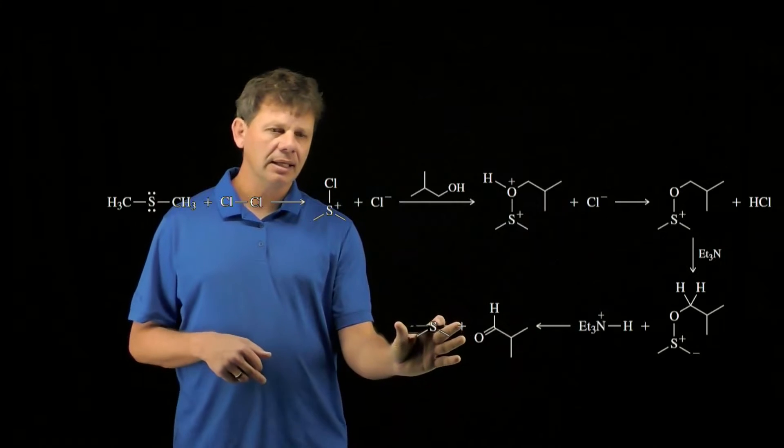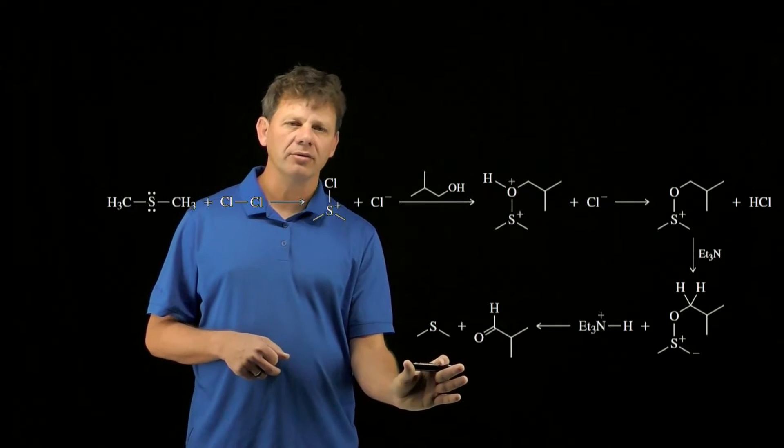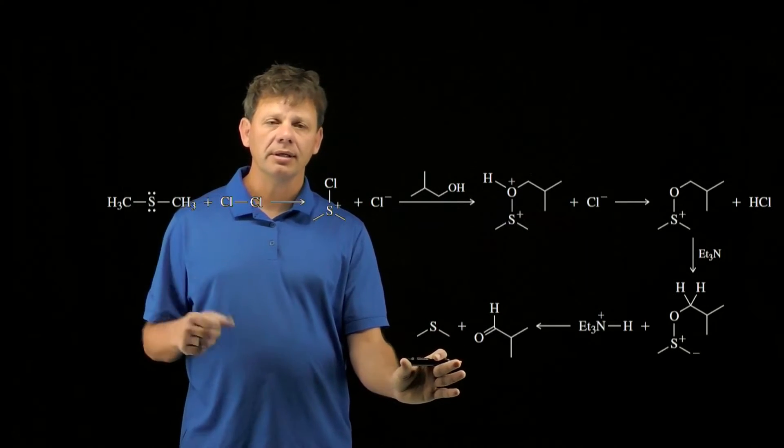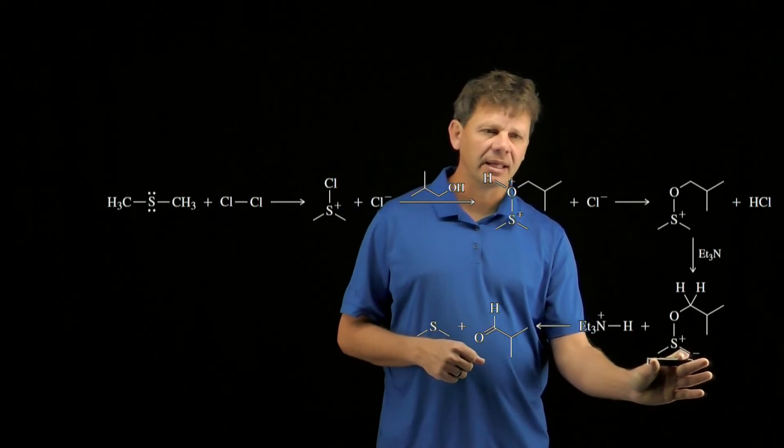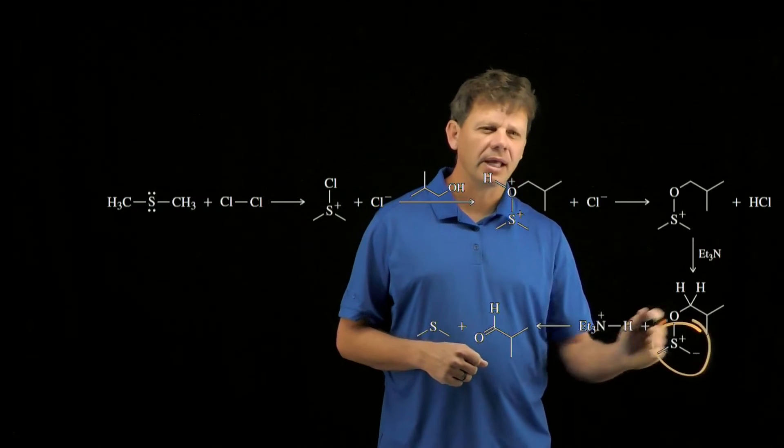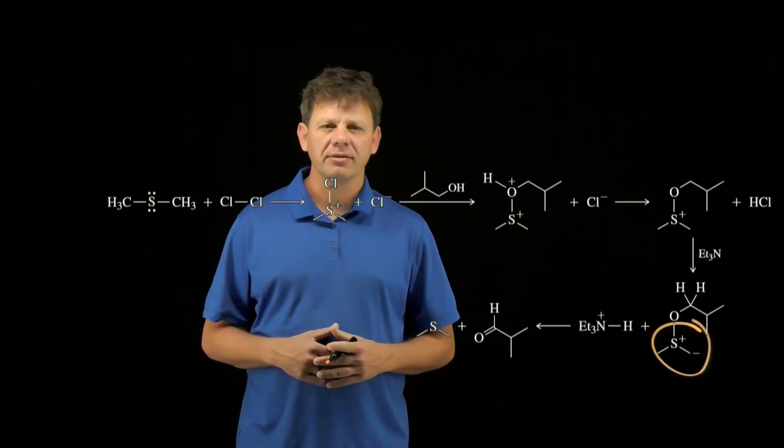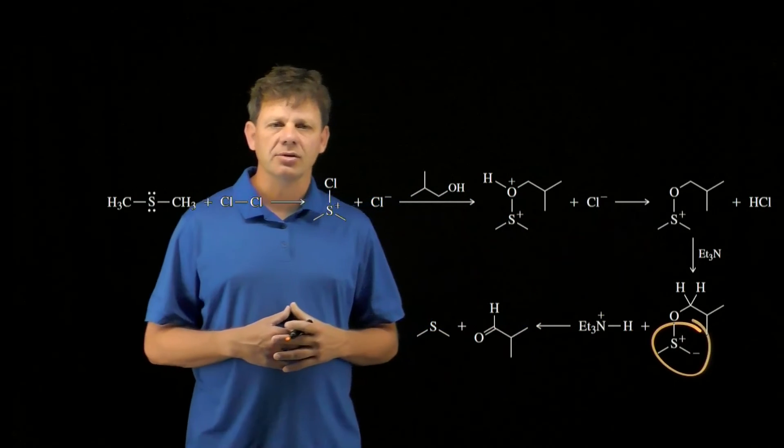But when we look at it in the product, that sulfur now has two pairs of electrons and only two bonds. So it's that sulfur species that gets reduced during the oxidation step of this overall oxidation reaction.